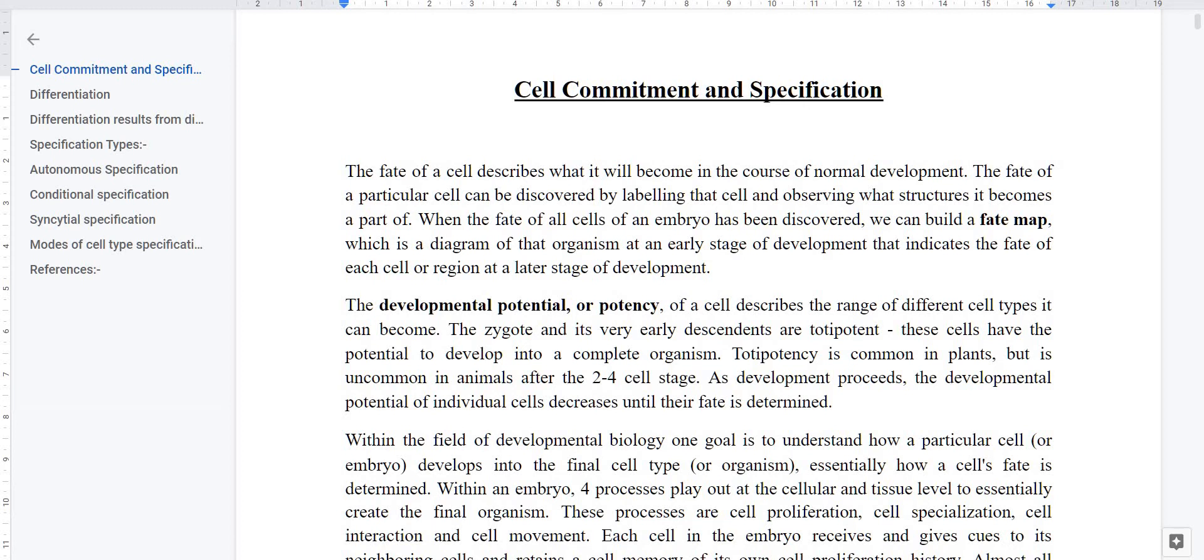Now we say that the zygote is single celled and totipotent. The totipotency in the zygote ends after the 2 to 4 cell stage in animals. In plants, totipotency remains. That is why plant development is an open type of development. In plants, meristematic cells remain throughout life. In animals, this does not happen.